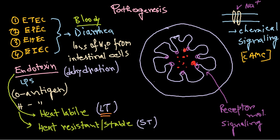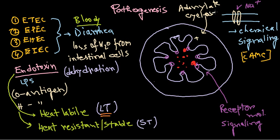But in this case, the LT toxin won't be cleaved and removed — instead it stays bound to the receptor continuously. As a result, it keeps the signaling pathway on throughout the time. This leads to a rise in adenylate cyclase — an enzyme — inside the villi cells. Adenylate cyclase is responsible for converting ATP into cyclic AMP.